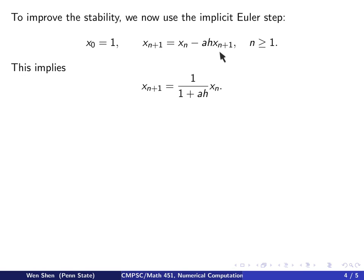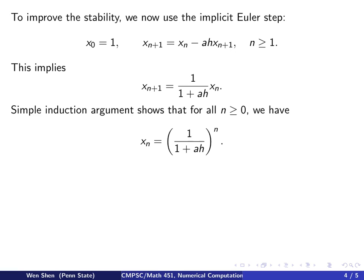Solving for x_(n+1) gives x_(n+1) = 1/(1+ah) x_n. Simple induction shows that for all n ≥ 0, we have x_n = (1/(1+ah))^n.